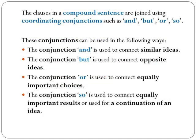The clauses in a compound sentence are joined using coordinating conjunctions, such as and, but, or, so. The conjunction "and" is used to connect similar ideas. The conjunction "but" is used to connect opposite ideas. The conjunction "or" is used to connect equally important choices. And the conjunction "so" is used to connect equally important results or for a continuation of an idea.